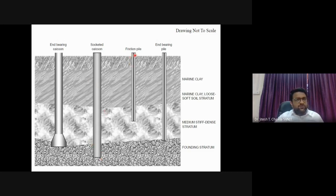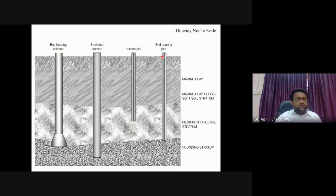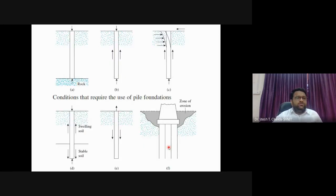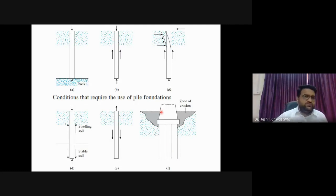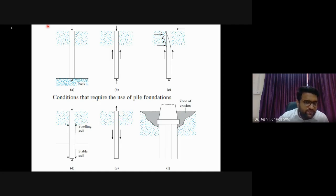There are two main categories of pile load transfer: friction piles, which are 'floating' in soil with no end bearing and rely entirely on shaft friction capacity; and end bearing piles, which transfer load primarily through their tip to a firm stratum.